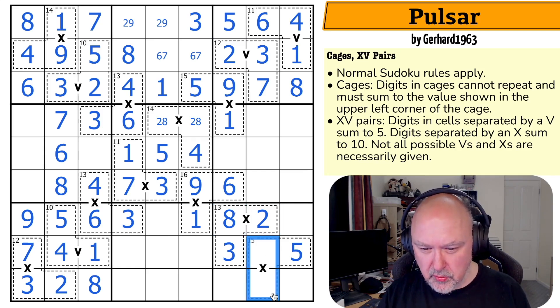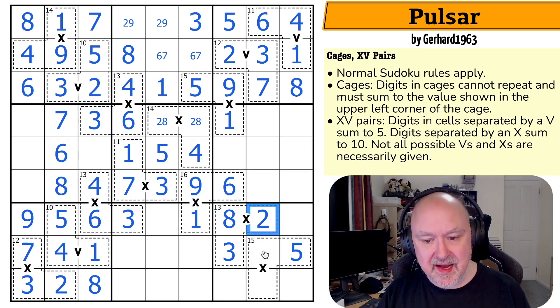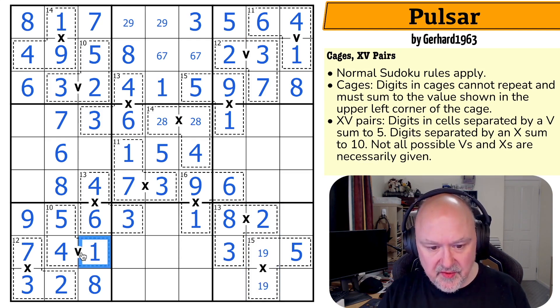It has to be because the only options, one-nine not available, two-eight is available, three-seven is not available and four-six is not available. This is two-eight, and the two is looking down, making that the eight and that the two. These now need a low digit. Yes, it can't. This could be one-nine. It can't be two-eight, it can't be three-seven, and it can't be four-six because of the six up here. This is one-nine. And the one here is looking across, making that the nine and that the one.